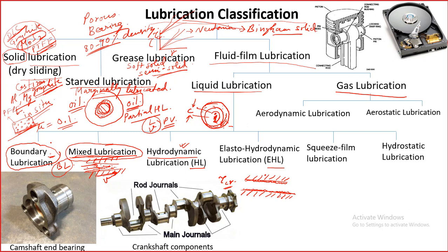Boundary lubrication can provide a coefficient of friction in the range of 0.1 or higher, and mixed lubrication is also in the range of 0.1 or lower. Hydrodynamic lubrication provides a coefficient of friction in the range of 0.001 to 0.005 — very very low. However, mixed and boundary lubrication will occur in all bearings at some point.